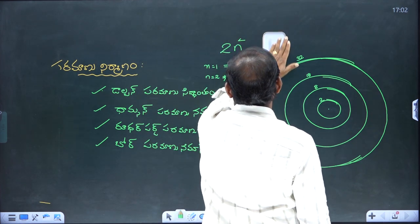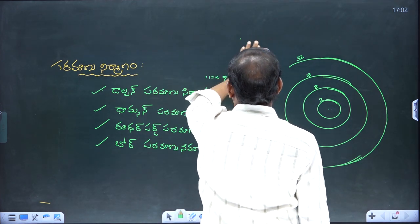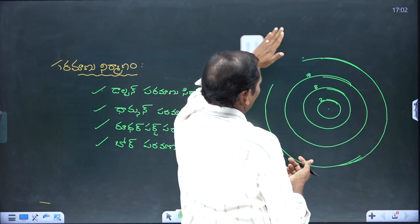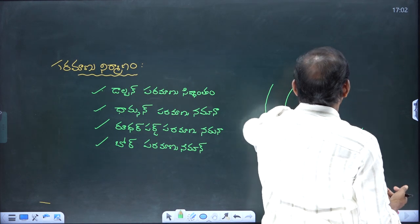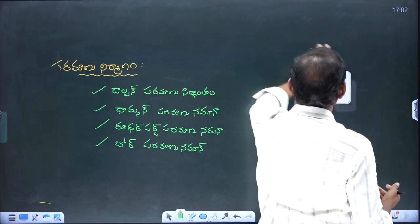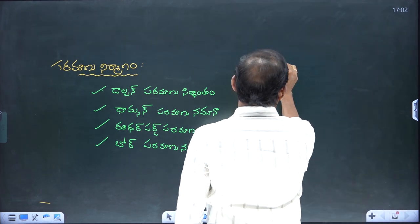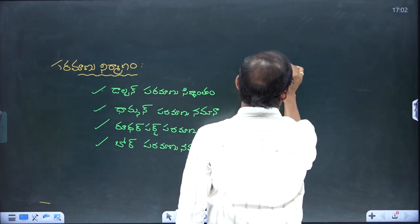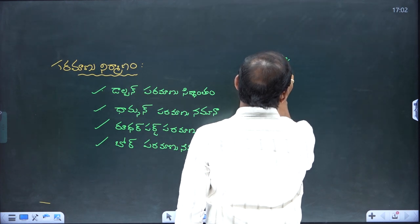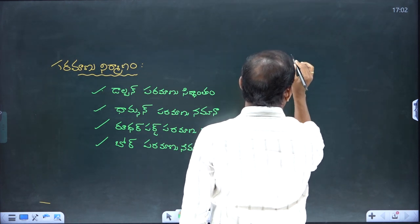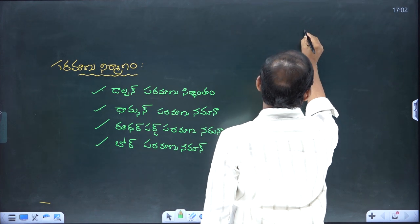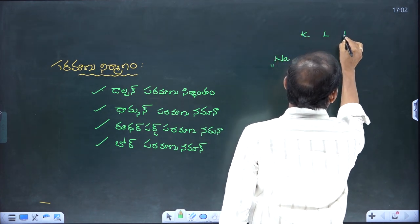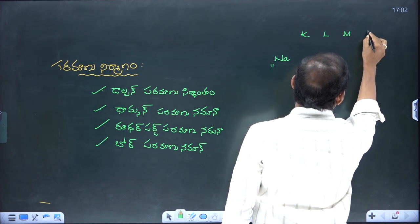The second orbital relates to quantum numbers. The electron arrangement is very important. The first orbital is called K, the second orbital is L, the third orbital is M. The electron limits change accordingly per orbital.